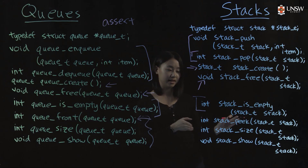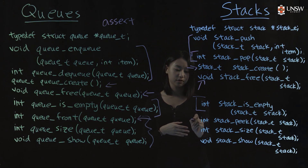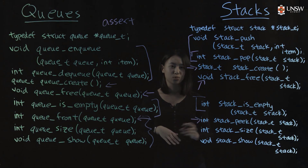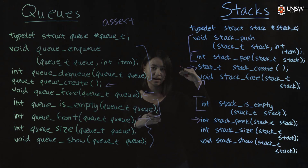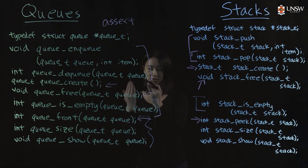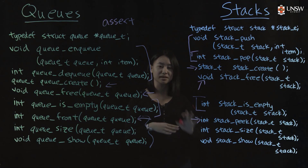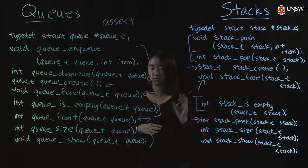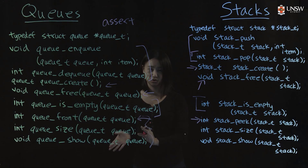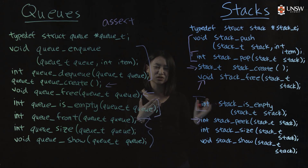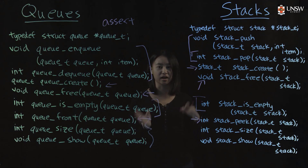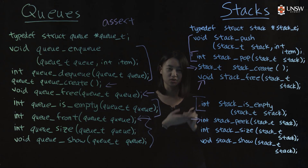Something similar for stacks is the peek function. With stacks, if you want to see what's at the top, you could simply pop it off, look at what it is, and then push it back on. It doesn't mess up the order as much as it does with queues, but it's still an unnecessary operation — so that's why we have a peek function, so you can peek at the top of the stack.